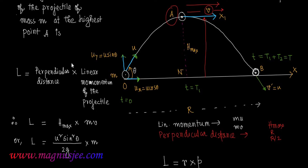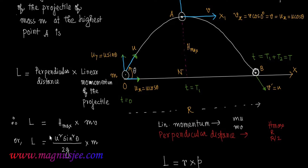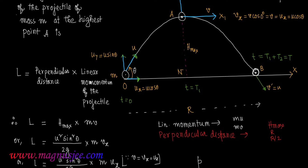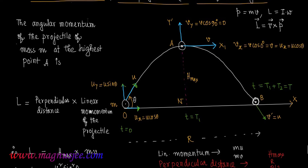In place of h_max we write u² sin²θ / 2g. At the highest point A, the vertical component of v is zero, and the horizontal component v_x equals v cos 0° = v = u_x = u cosθ, since horizontal component remains constant. Therefore L = (u² sin²θ / 2g) × m × u_x, where v_x = u_x equals the horizontal component of velocity at the initial point O.